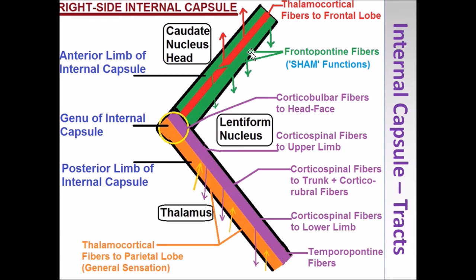Of course there are many more functions. This central portion of the anterior limb, marked in red, carries fibers going up — also thalamocortical fibers, but with a considerable difference: while the posterior limb thalamocortical fibers carry general sensation, these thalamocortical fibers do not go to the parietal lobe. Instead, they go to the frontal lobe. One example is fibers that are part of the Papez circuit, going from the anterior nucleus of the thalamus to the cingulate gyrus. There are many such thalamocortical fibers traveling in the anterior limb of the internal capsule.